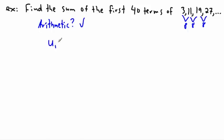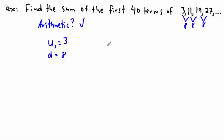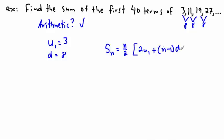Because of that, I can write down: u₁, the first term, is 3. And the common difference d is 8. So I'm in business. I can use the S_n equation. It's always a good idea to show your work by writing the generic equation: S_n equals n over 2 times 2u₁ plus (n minus 1) times d.